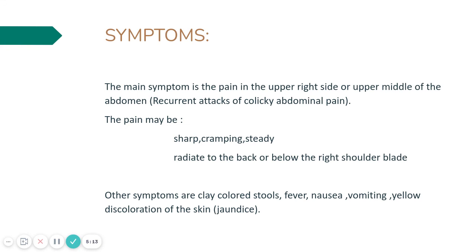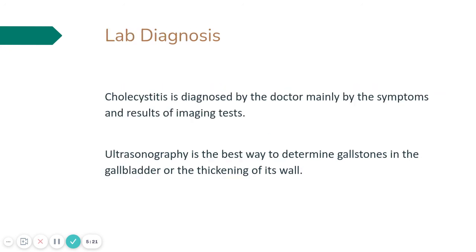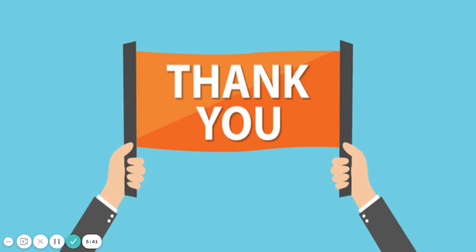Other symptoms include clay-colored stools, nausea, vomiting, fever, and yellow discoloration of the skin — that is jaundice. Cholecystitis is diagnosed by the doctor mainly by symptoms and the results of imaging tests. Ultrasonography is the best way to determine gallstones in the gallbladder or the thickening of its walls.